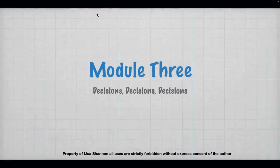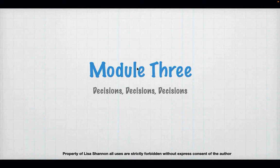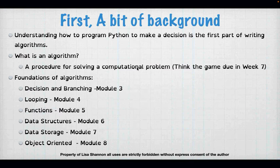This is Module 3, and this week we are talking about how to make decisions - how in Python, really any programming language, how do we get it to do something? We've gone through how to get data into a program and out of a program, and we've done some calculations. But that's very limiting. What we really need to do is determine how to build processes, to build algorithms. An algorithm is a procedure for solving a computational problem. We can think of our labs and our final project as computational problems, and over the next couple of weeks I'm going to help you break those down into smaller computational problems that can be more easily tackled.